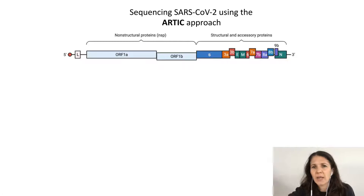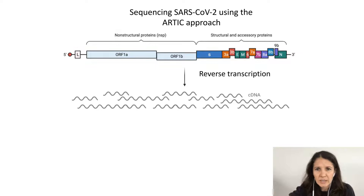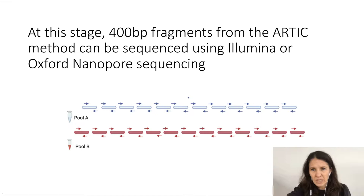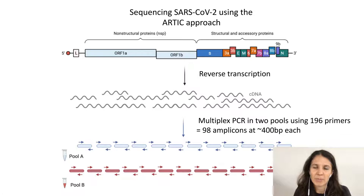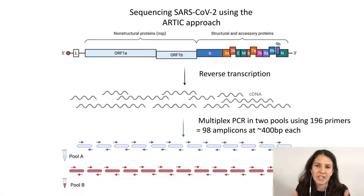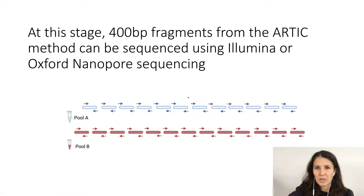The ARTIC method works like this: here you can see a graphical representation of the genome — a 30,000 nucleotide RNA genome. The first stage is to do a reverse transcription, converting that RNA genome into cDNA, since it's easier to sequence DNA than RNA. The next step is a multiplex PCR using a tiled amplicon approach so there are no overlapping amplicons. The ARTIC method amplifies the genome in 400 base pair segments using 196 primers, creating about 98 amplicons to amplify the entire genome.